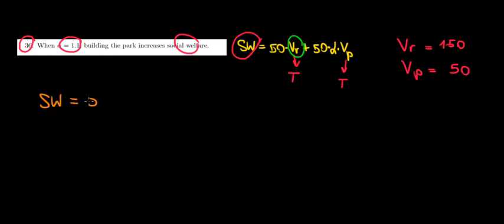So what we will have now is the following: the social welfare is gonna equal to 50 times the valuation of a rich person, which is 150 euros. That's how much benefit he gets. So that's 150 minus the tax that he has to pay, and we saw that he pays 175 euros in taxes and also an excess burden of 5 euros per person.